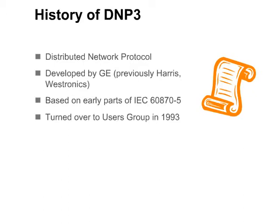DNP stands for Distributed Network Protocol. It was developed by GE, previously Harris or Westronics, and was based on the early parts of IEC 60870-5. After developing the protocol, Westronics turned it over to a user's group. This was a rather unusual move, since most manufacturers at the time kept their protocols proprietary. It turned out to be a very smart move, however, because the open protocol gained wide acceptance throughout the world.